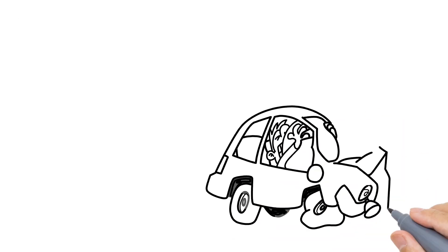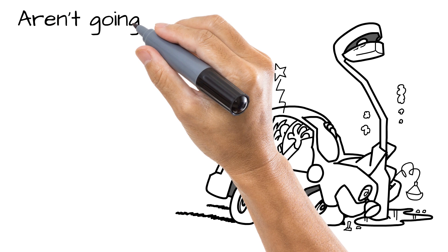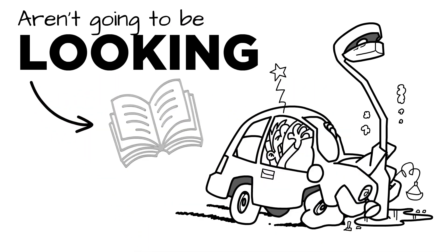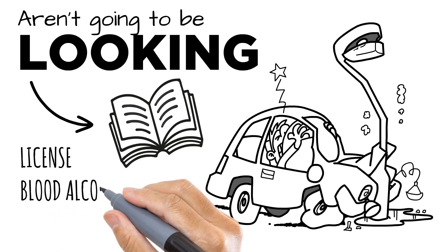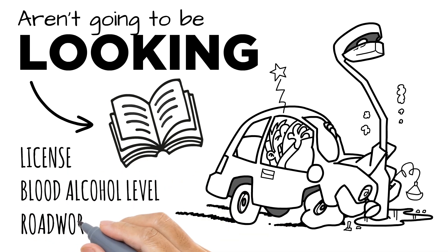If you crash your car, the police or the insurance company aren't going to be looking at whether you had a good manual in the glove box. They're going to be looking at whether you had an appropriate license, a low blood alcohol level, and a road-worthy car.